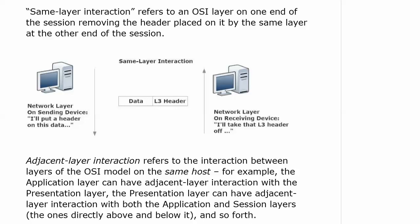Adjacent-layer interaction refers to the interaction between layers of the OSI model on the same host. For example, the application layer can have adjacent-layer interaction with the presentation layer. The presentation layer can have adjacent-layer interaction with both the application and session layers, because those are the layers directly above and below it — and so forth.